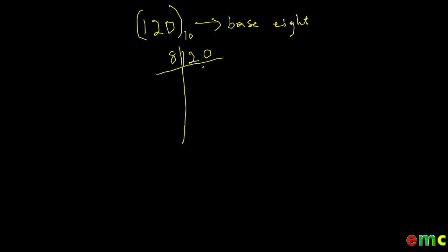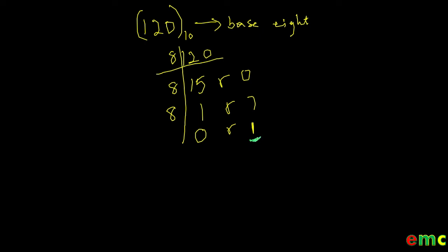120 divided by 8 gives 15 remainder 0; 15 divided by 8 gives 1 remainder 7. Then 1 divided by 8 is not possible, so we replace our 1 with 0 and bring down the 1. The 1 at the bottom is the most significant digit, so we start writing our value from the bottom up.